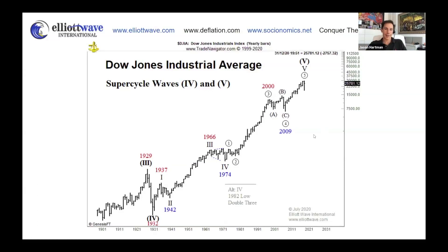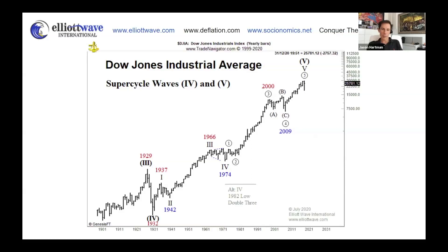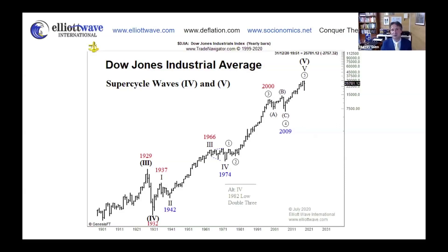It's based on the Elliott Wave structure. There are rules and guidelines that Elliott identified for wave formation. Adhering to those rules, this chart shows one potential structure — the most probable at the moment. One key reason we think it's most probable is the huge buildup in debt, which is one of the main reasons we think deflation is the bigger risk. Does debt cause deflation? Is that a premise of the Elliott Wave philosophy?